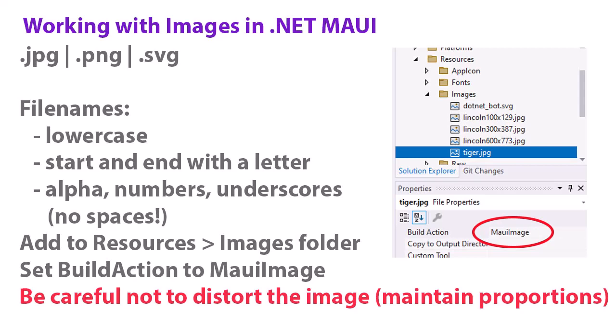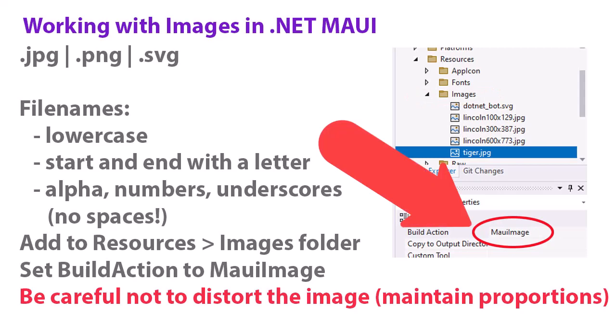To add your picture to your project, you want to go to the Resources folder, open up the Images folder, right click on the Images folder and choose Add Existing Files, then go find your file and import those in. You want to make sure that the build action in the properties for each image is set to MAUI image. In most cases, Visual Studio is going to do that for you, but always double check that.